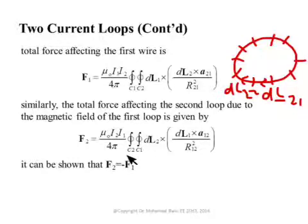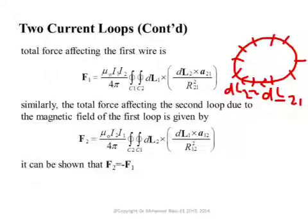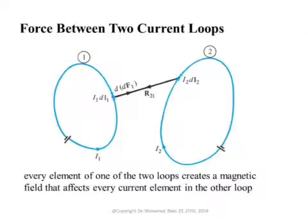It can be shown following exactly the same steps that the force on the second loop due to the field of the first wire is given by the same expression with the indices one and two reversed. Furthermore, F2 equals negative F1. This general expression is very important for calculating the force between arbitrarily shaped loops or wires by evaluating this double integration.